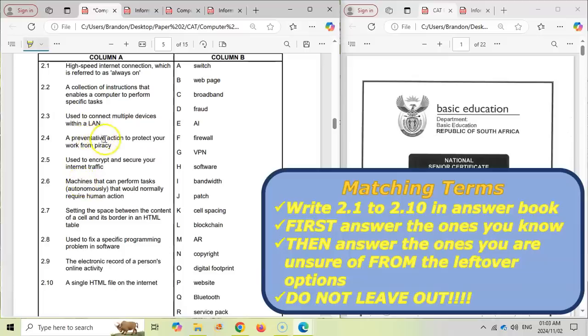So for example, they said use to connect mobile devices. Well, that's a switch. So because you've used A here, you might not end up using the correct option for 2.3. So that's why go through the ones that you definitely do know and then mark them off.